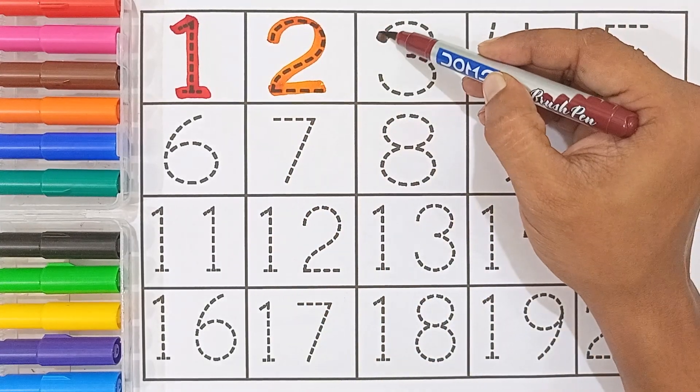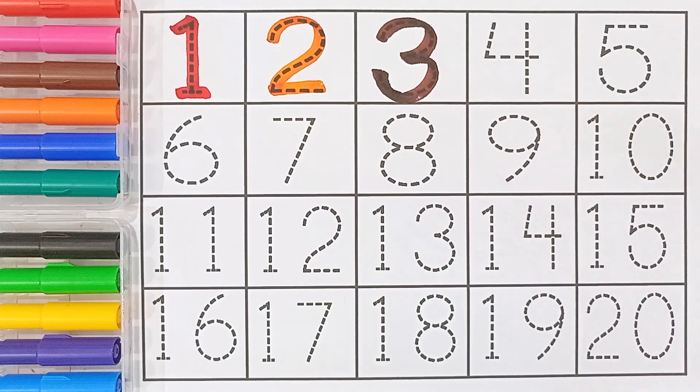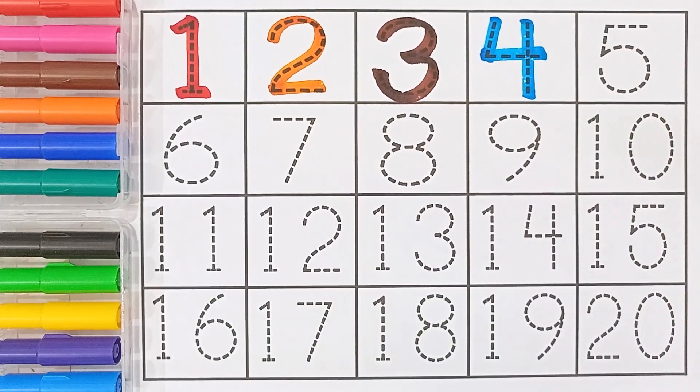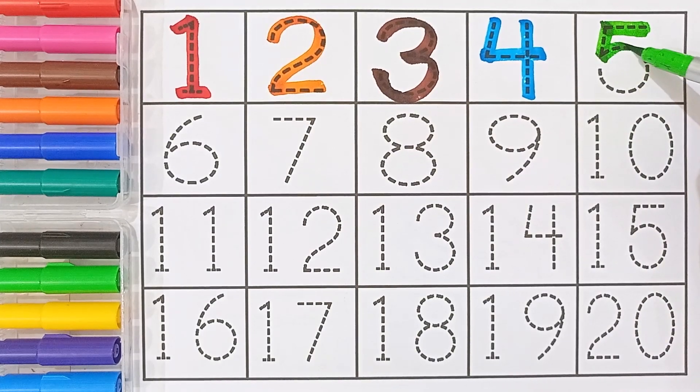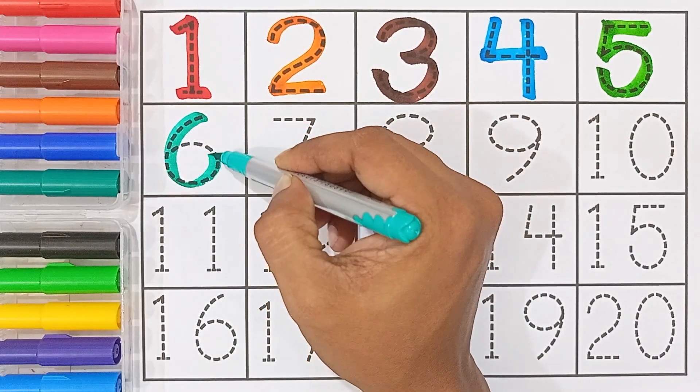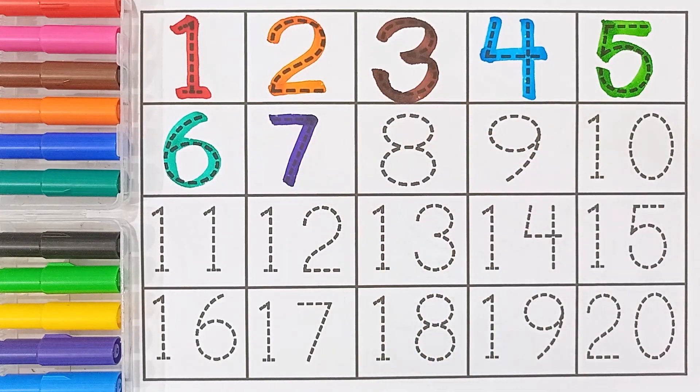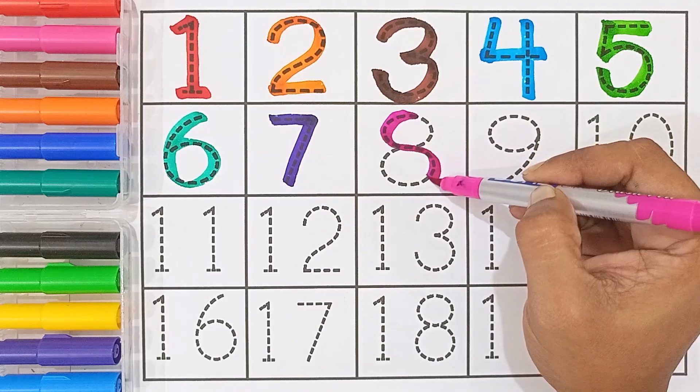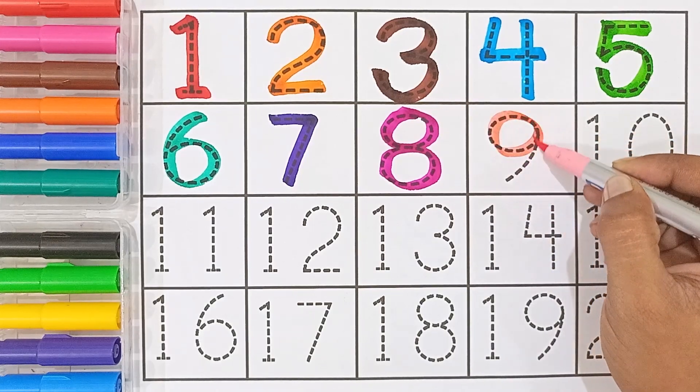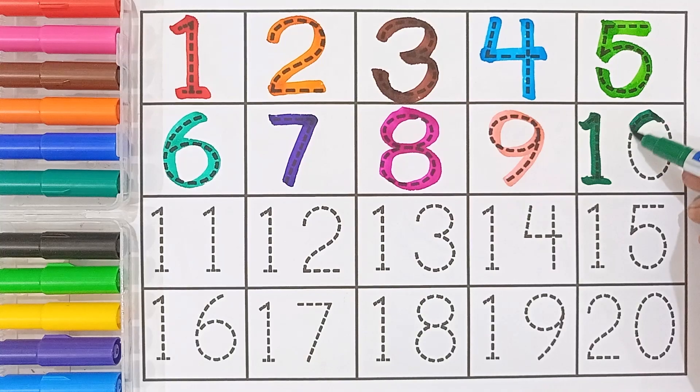Three, brown color. Three. Four, sky blue color. Four. Five, light green color. Five. Six, sea green color. Six. Seven, violet color. Seven. Eight, magenta color. Eight. Nine, light pink color. Nine. Ten, green color. Ten.